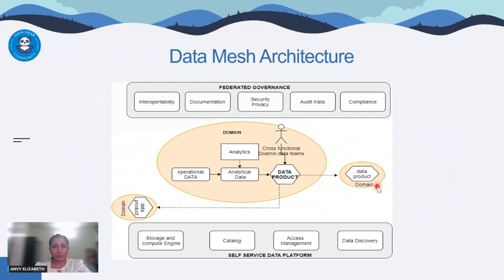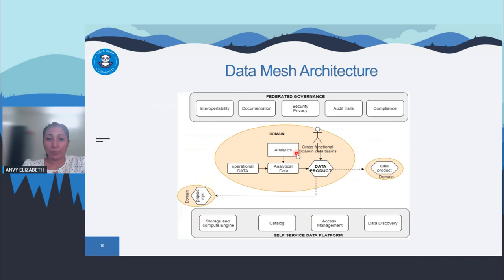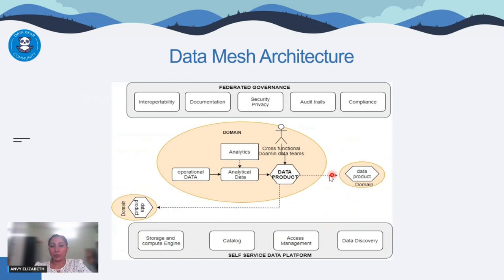The third pillar is self-service data platform: a common data platform for all domains where domains can create, execute, and build their own data products, easily accessible by others. The fourth pillar is federated governance: common standards followed by all domains, ensuring organizational policies and industrial regulations are met across all domains. In the data mesh architecture, a domain owns its operational and analytical data through a cross-functional team, creates data products, exposes them via output ports to other domains, and a federated governance layer with a self-service platform enables common standards and easy data product creation and sharing.